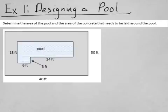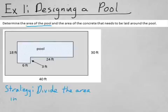If this is going to be the layout of your pool that you're going to build in your backyard, you would need to know the area of the pool and the area of the concrete that needs to be laid around the pool. So using this diagram, let's find that. Here's our basic strategy for these kinds of questions: you want to divide the area into convenient shapes.